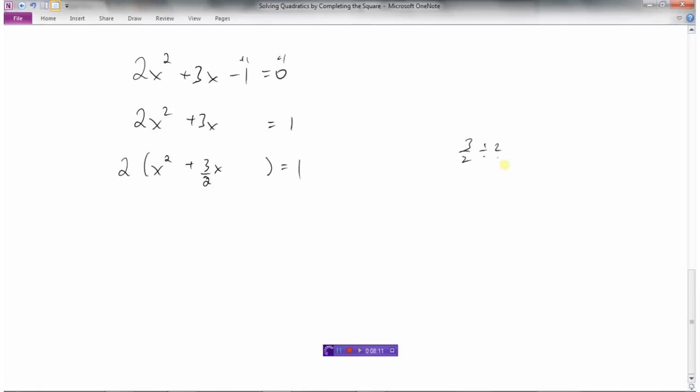So we would have to take half of 3 over 2. So we have 3 over 2, we got to divide that by 2. Remember 2 is like 2 over 1, and if we're dividing by 2 that's the same as multiplying by the reciprocal. So this becomes 3 times 1 which is 3 over 2 times 2 which is 4. So if I divide that by 2 I'm going to get 3 fourths and now I got to square it. Well that's going to be 3 squared 9, 4 squared 16.